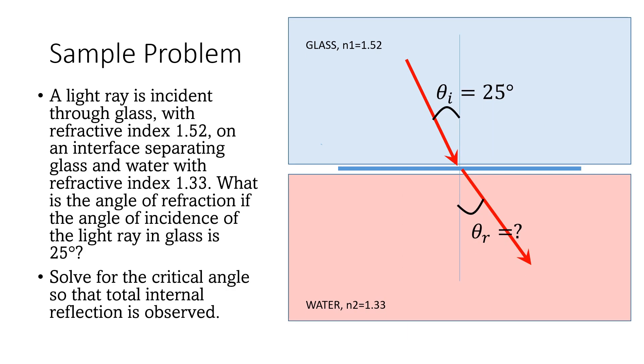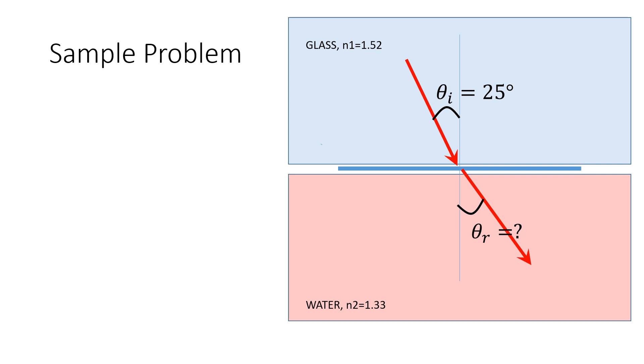To solve for the critical angle, we may use the derived equation of the total internal reflection which is theta c is equal to inverse sine of n2 over n1.